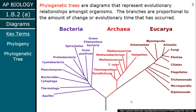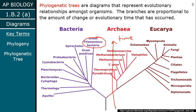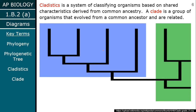Phylogenetic trees are diagrams that represent evolutionary relationships, and the branches are proportional to how much evolutionary time has passed. The further apart some branches are, that means they evolved further back. What I like to do is visualize an axis — the origin of life is way back at the beginning, and as you move away, time moves forward. The tips of the branches are present day.